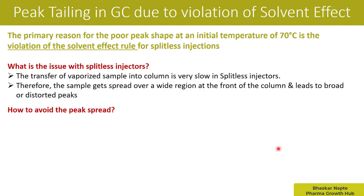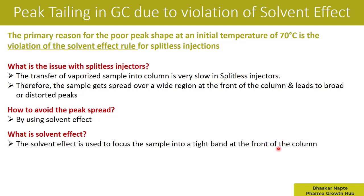How do we avoid peak spreading? As explained, the peak can spread in splitless mode, and since it is sometimes necessary to use splitless mode, the answer is to use the solvent effect. I will further explain what the solvent effect is and how it occurs. The solvent effect is used to focus the sample into a tight band at the front of the column.